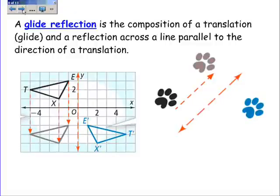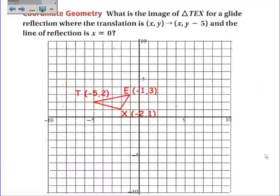A glide reflection is something slightly different — it's where you glide, like a translation, and then you reflect. A glide reflection is the composition of a translation and a reflection across a line parallel to the direction of the translation. You translate in one direction, and then reflect across a line that's parallel to that translation.